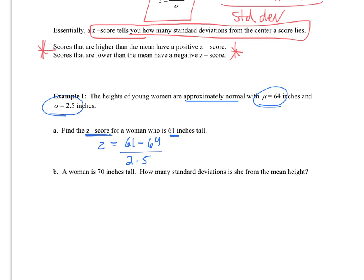Since her height is smaller than the average, we should expect this to be a negative value, and we get -1.2. What this means is that her height is 1.2 standard deviations below the mean.